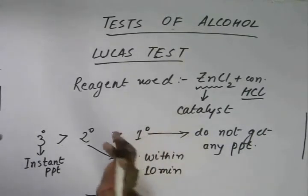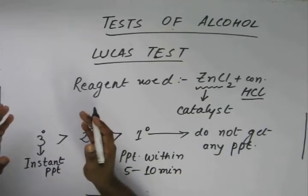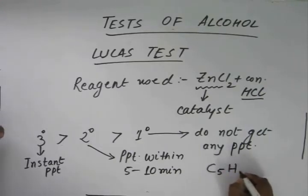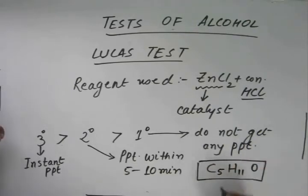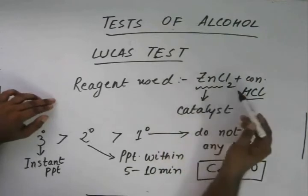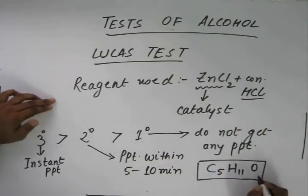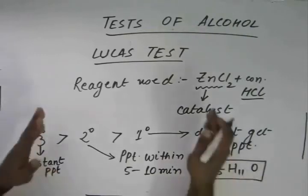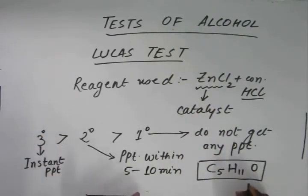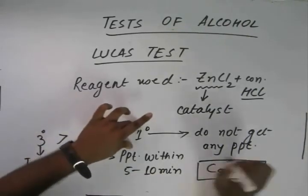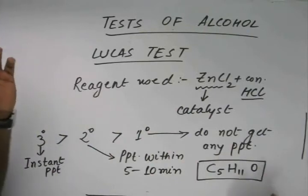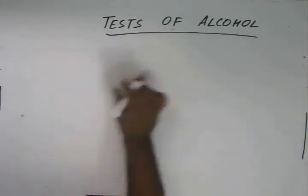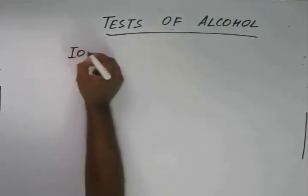As far as questions are concerned, they will be framed like this: if we have a compound like C₅H₁₁O and after adding Lucas reagent we get an instant PPT, we know this is a 3° alcohol. If the PPT is obtained within 5 to 10 minutes, it is a 2° alcohol. If no PPT is obtained, it is a 1° alcohol.